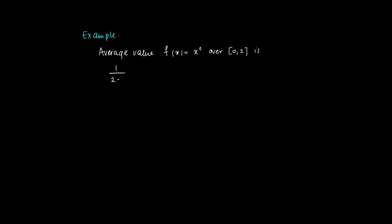this is given by the formula 1/(b-a). With b = 2 and a = 0, we get 1/2 times the definite integral from 0 to 2 of x² dx,